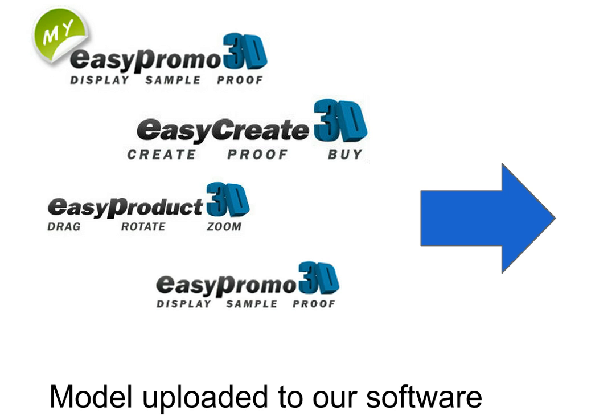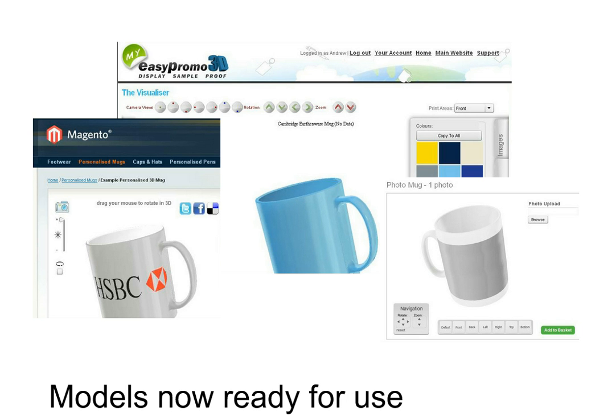We upload the model to our software and then it's ready for you to use. You can see here a few examples of the cloud-based tools we give you for creating and embedding into websites — you can see a typical example on Magento there — and creating customised products. So you can have your own 3D model of a product from as little as £25 a model.